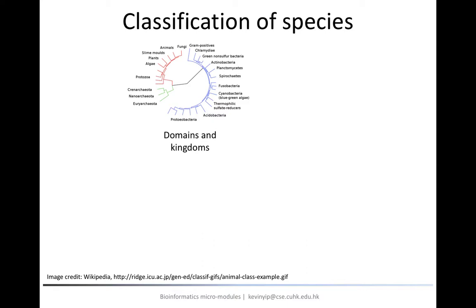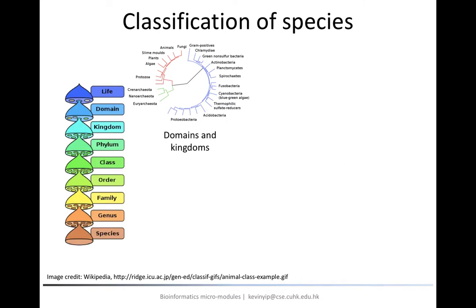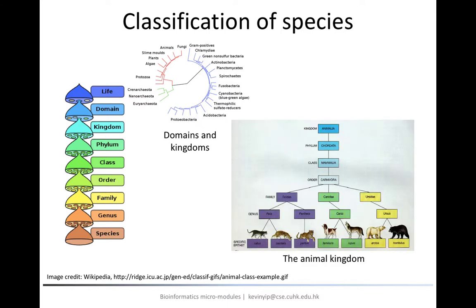Domain is only the first level of this taxonomy. If we go deeper, under each domain we have kingdoms, and under each kingdom we have phyla, then classes, orders, and so on. Let's use the animal kingdom as an example. Cats, ocelots, and tigers belong to the same family. Dogs and wolves belong to another, while different kinds of bears belong to yet another family.